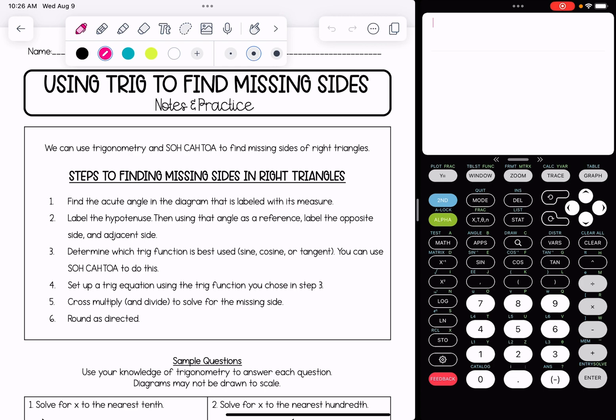Here are the steps we're going to be working through. First, find the acute angle in the diagram that's labeled with its measure. Then start labeling the triangle: label the hypotenuse, and using the angle from step one as a reference, label the opposite side and the adjacent side.